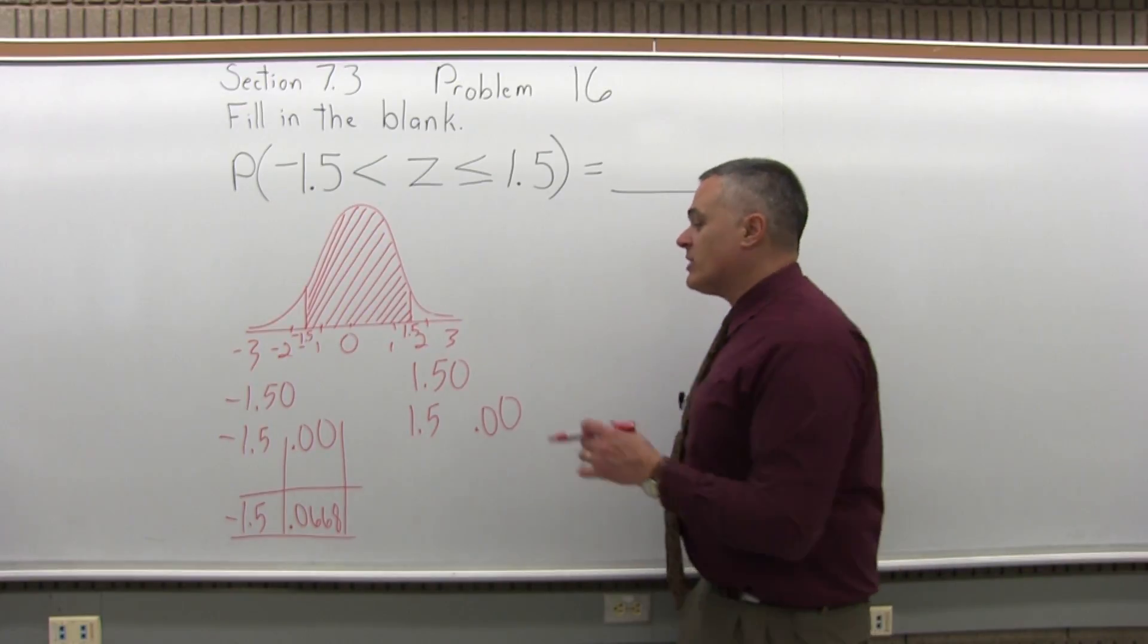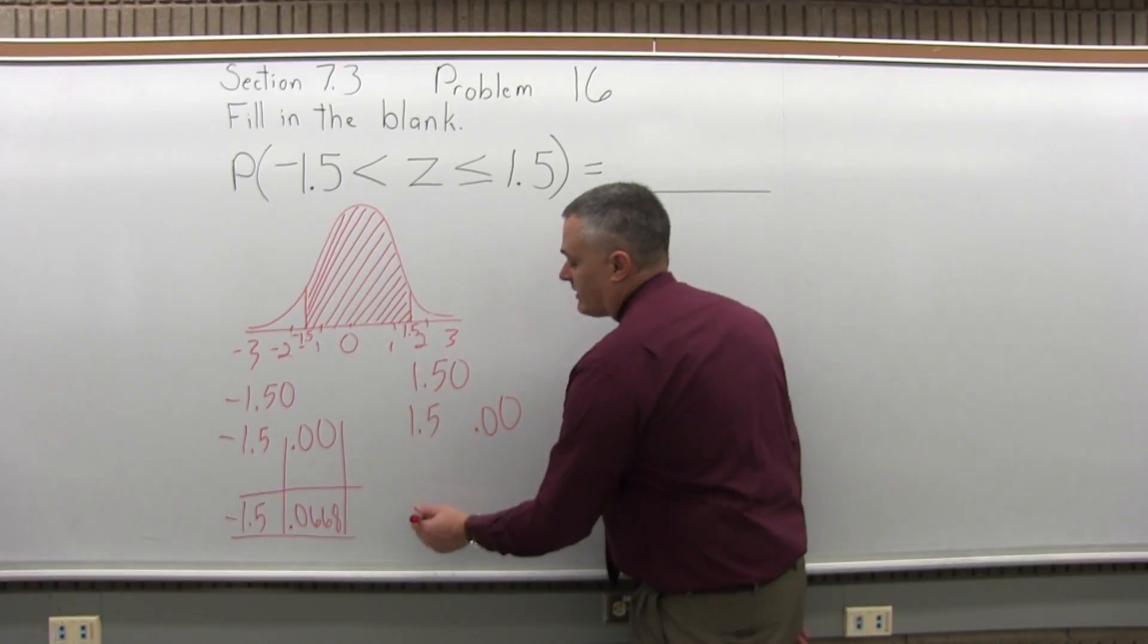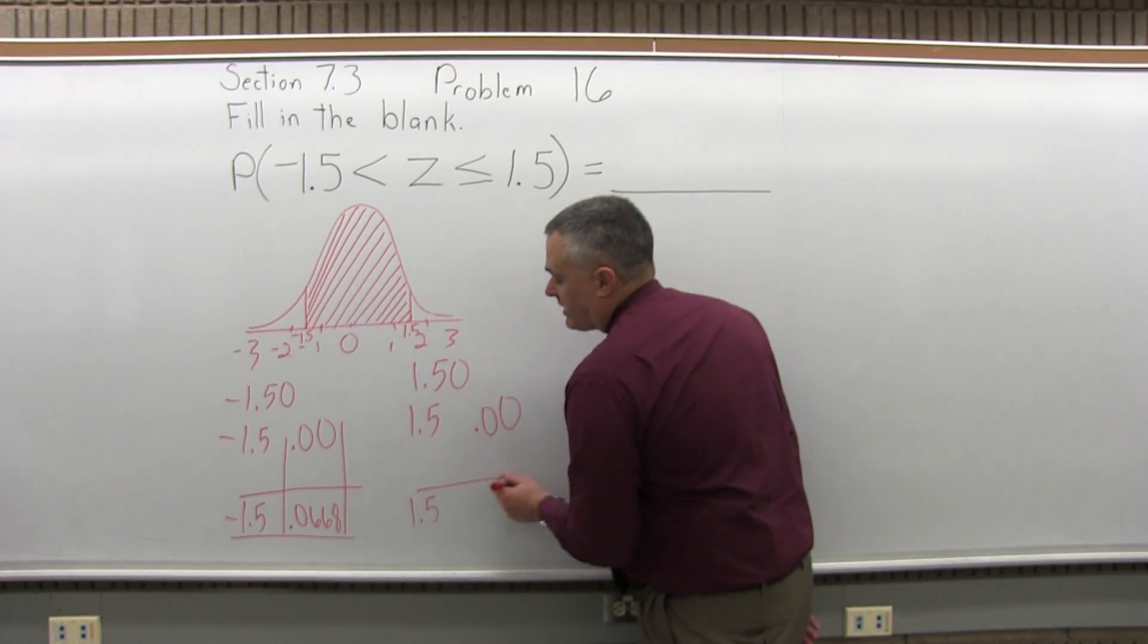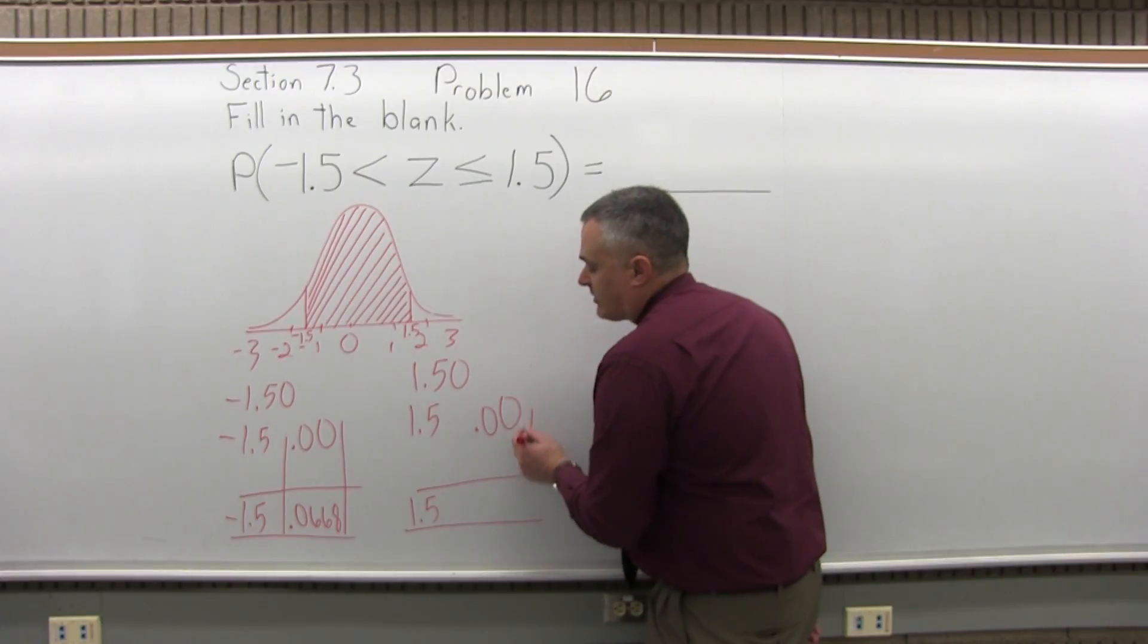And now, step 4, I'm going to go to the positive 1.5 row of my standard normal chart and look under the 0.00 column and see where those intersect. And they intersect at 0.9332.